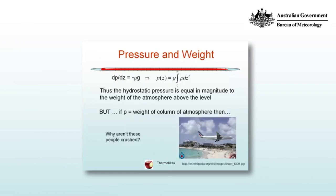Now dp/dz equals minus rho g means that the pressure at a height z equals g times the integral of rho dz from z to infinity. So the hydrostatic pressure is equal in magnitude to the weight of the atmosphere above that level. But if the pressure is equal to the weight of the column of the atmosphere above, then in the situation shown here when a plane flies overhead, why aren't people crushed? Go away and have a think about that.